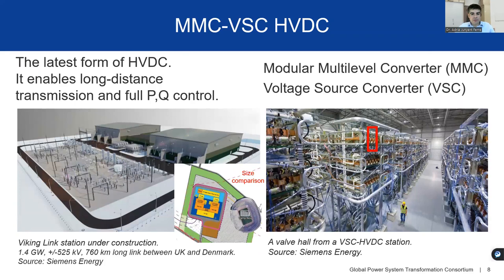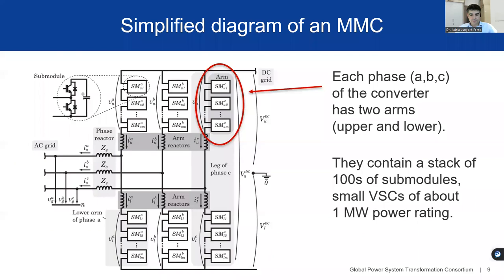For those not familiar with the technology, here are pictures from Siemens showing how the converter stations found at each end of an HVDC transmission line with VSC technology would look. This technology is based on a type of power electronic converter called the modular multilevel converter — a specific type of voltage source converter, which is a large family of converters that includes both small inverters used in PV systems and wind turbine generators, all the way up to the scale of HVDC.